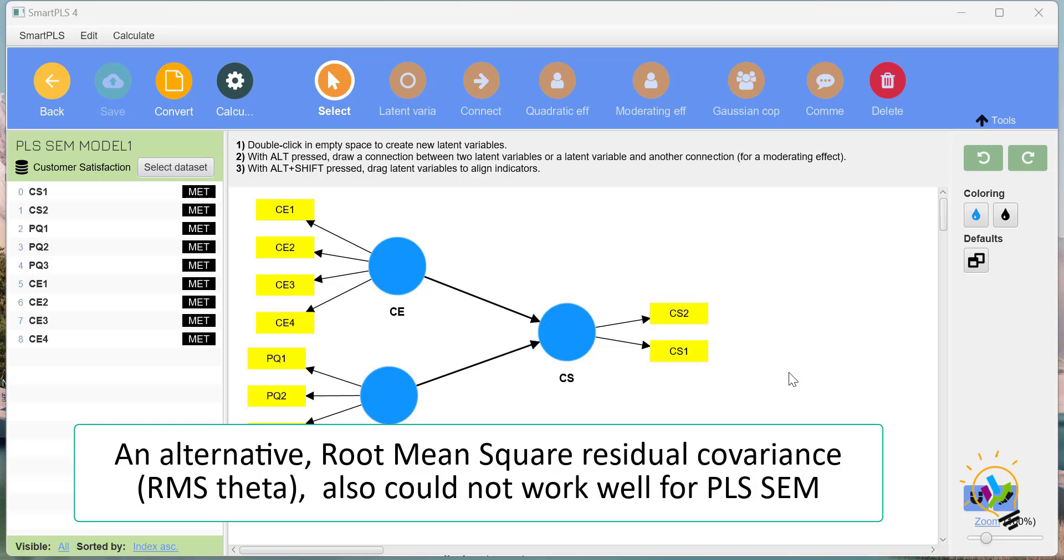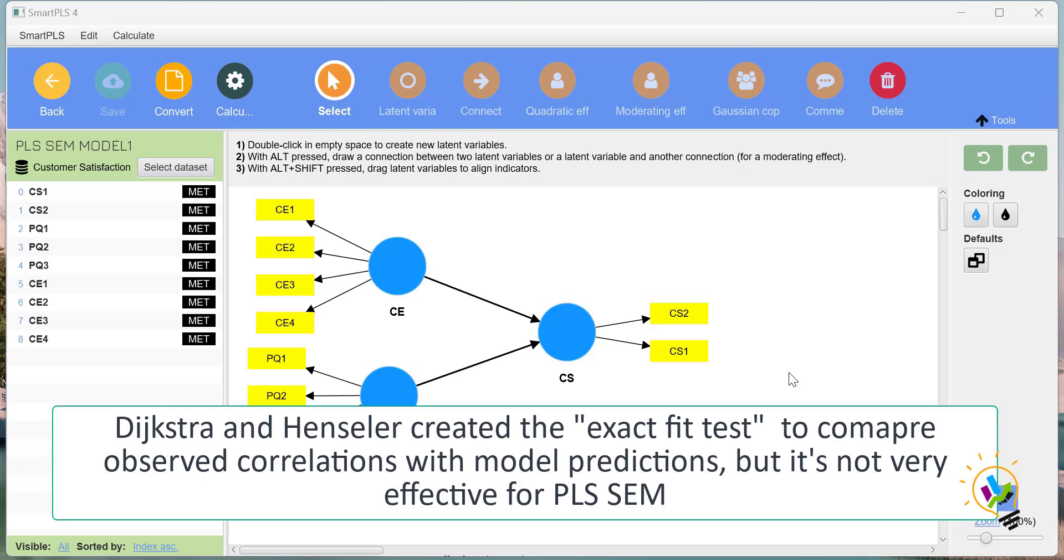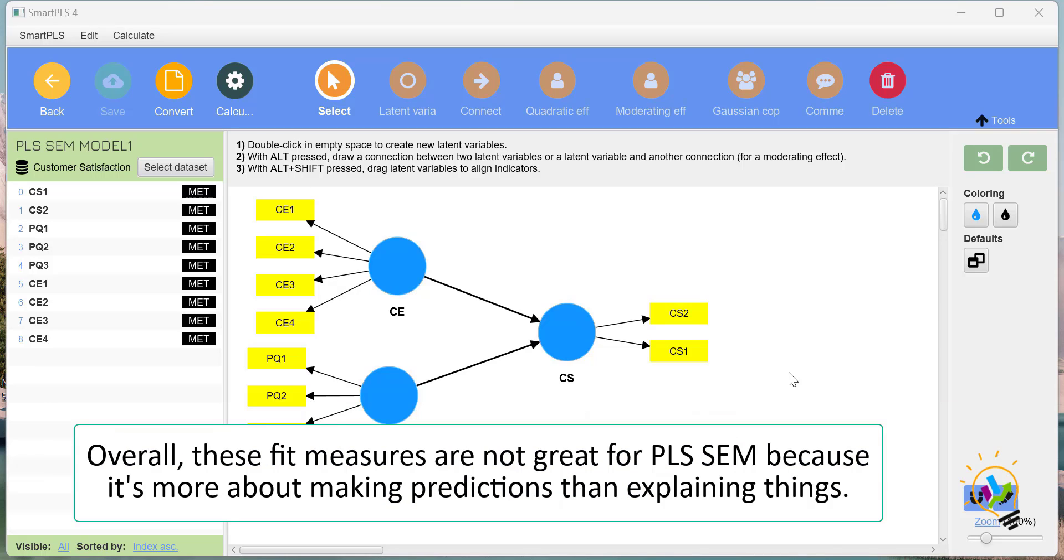Dijkstra and Henseler created the exact fit test to compare observed correlation with model predictions, but it's not very effective for PLS-SEM. Overall, these fit measures are not great for PLS-SEM.